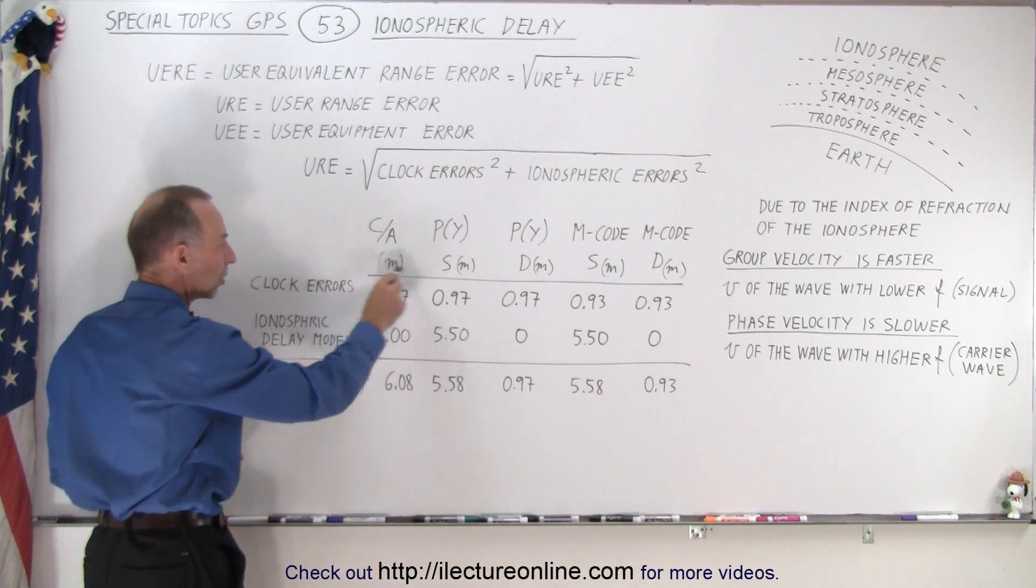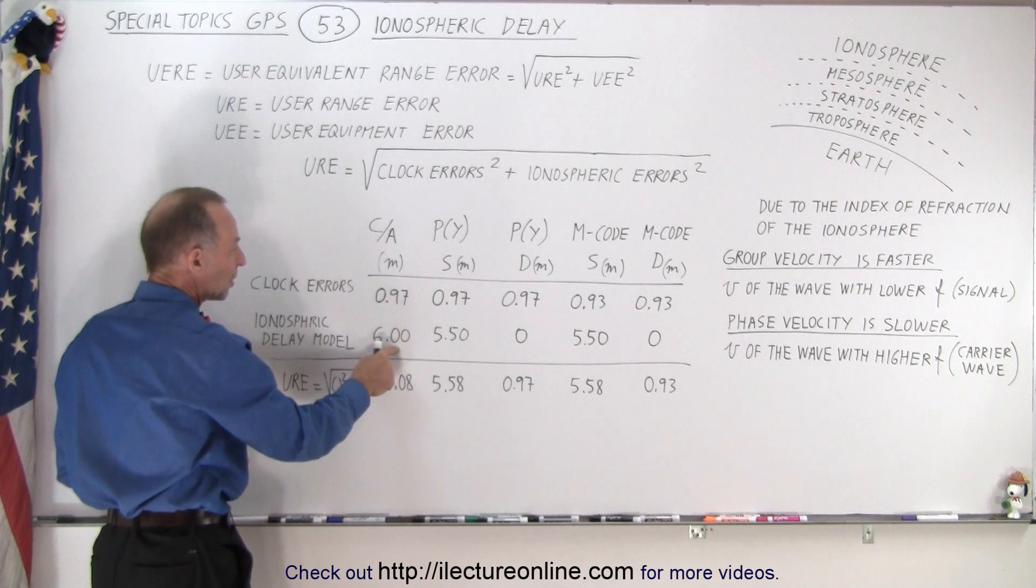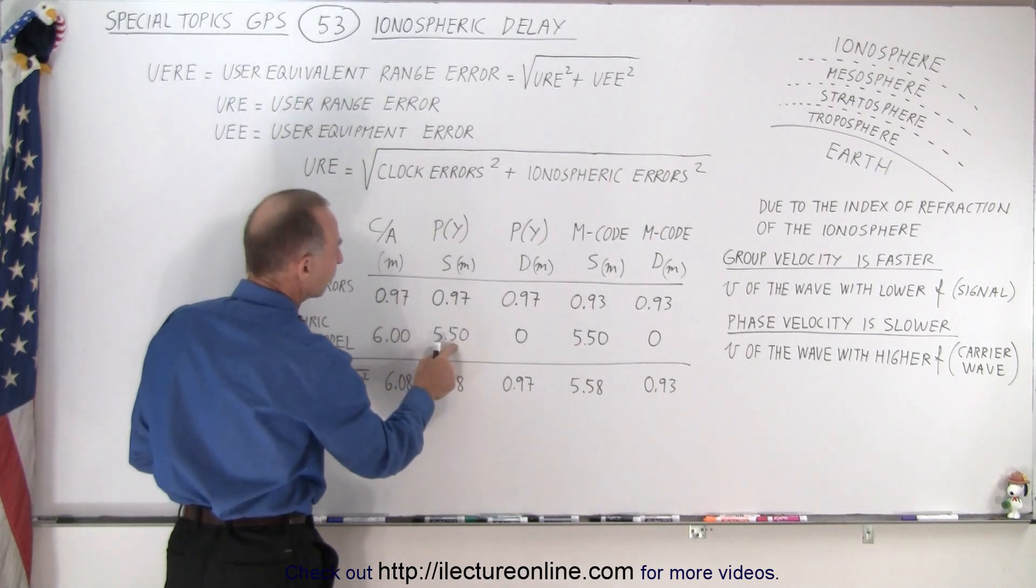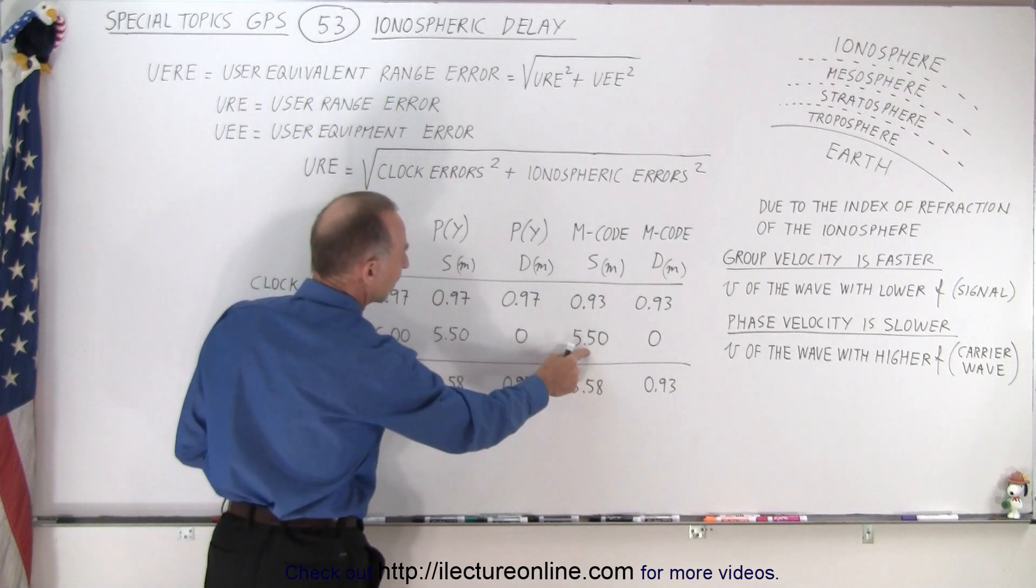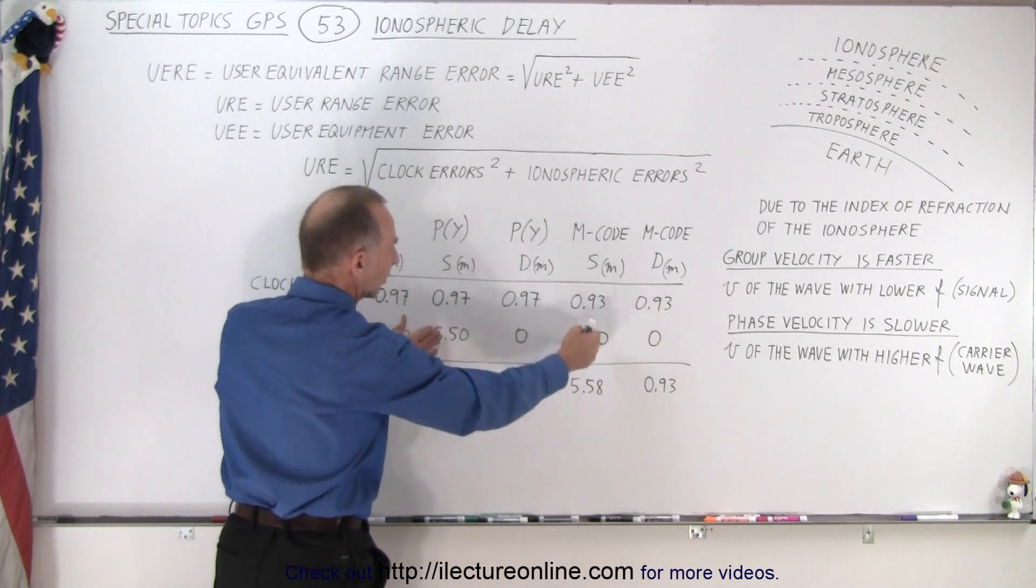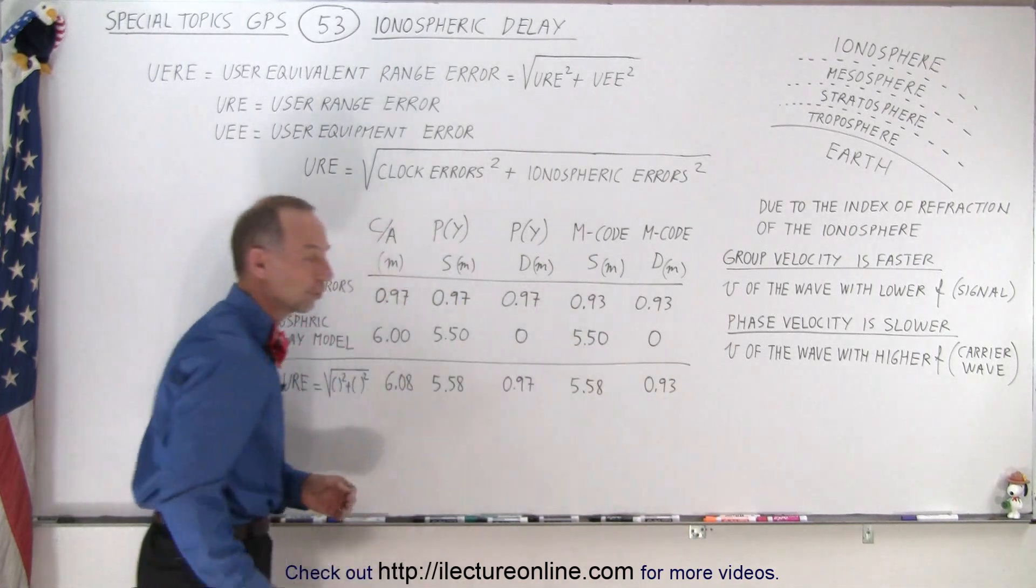Notice the ionospheric delay, and this is all in meters, can be 6 meters in CA code, 5.5 meters in Y code, and 5.5 meters in M code. But that's single channel. For dual channel, that error goes to zero.